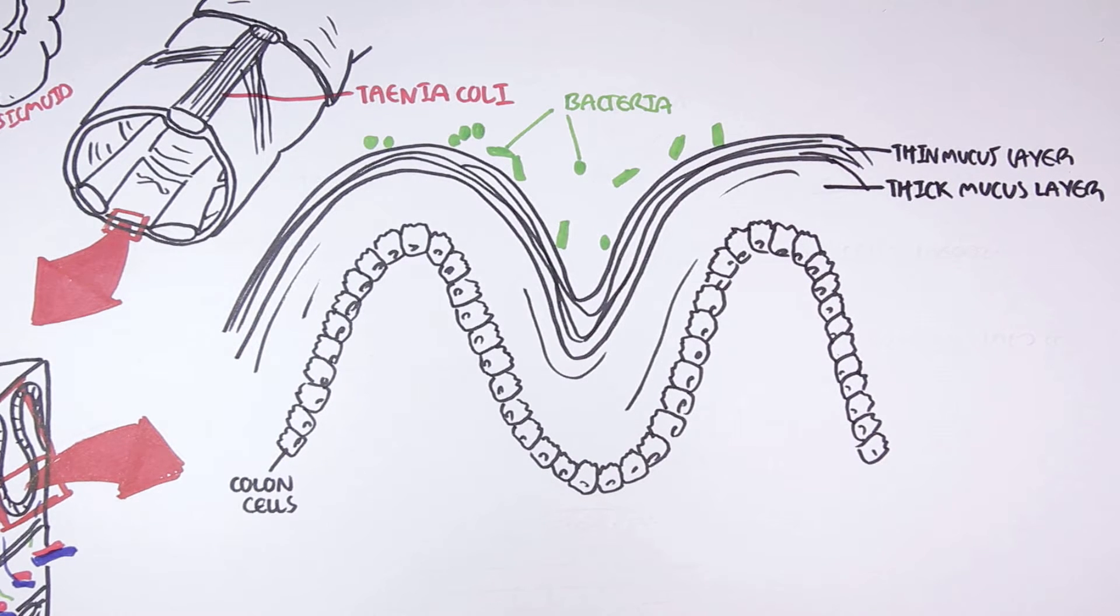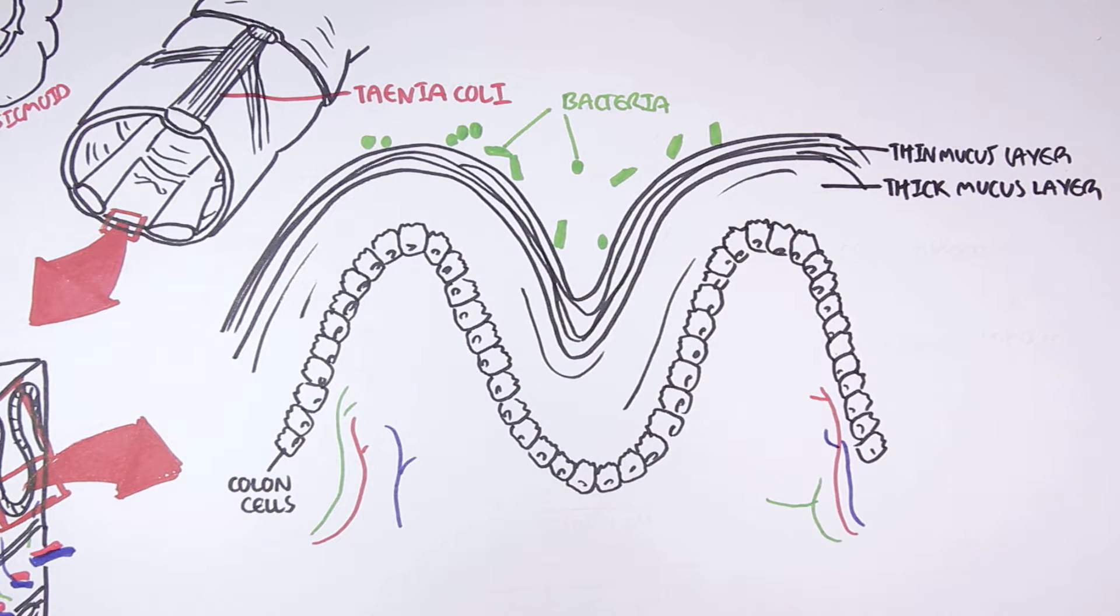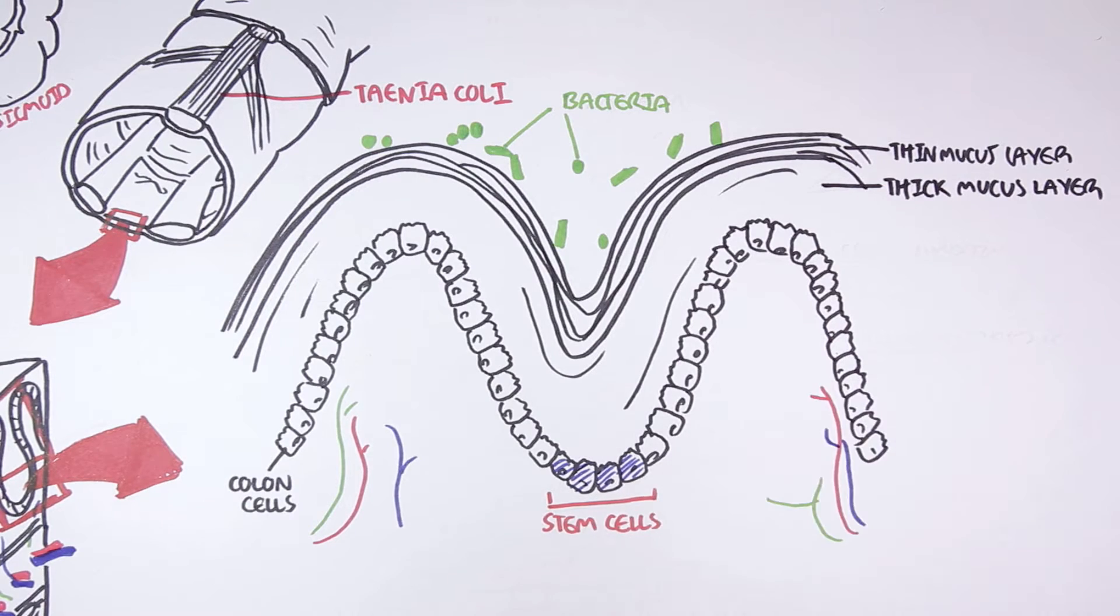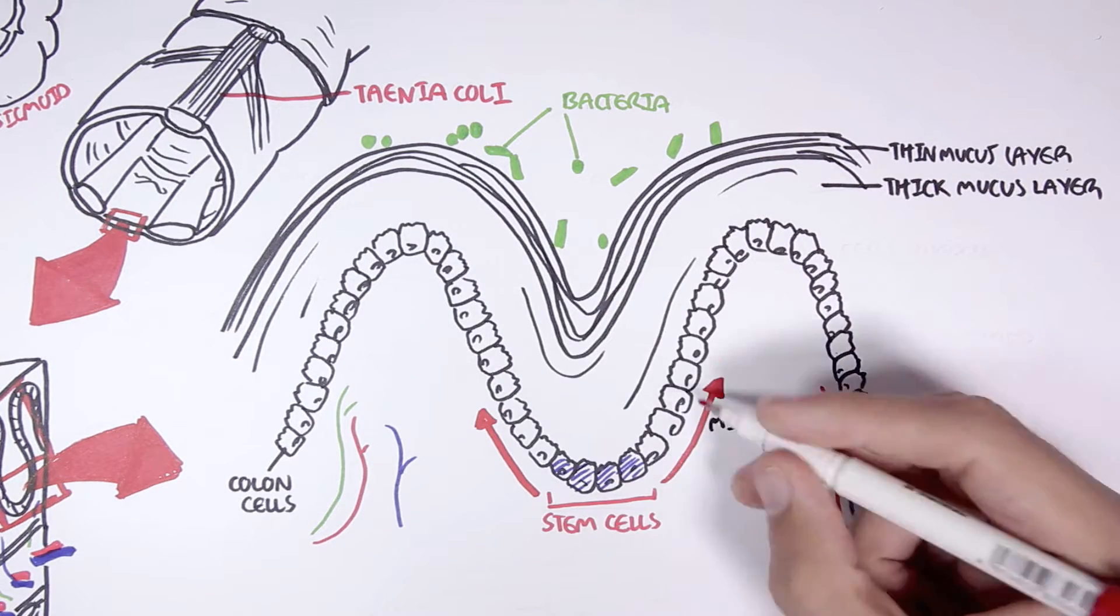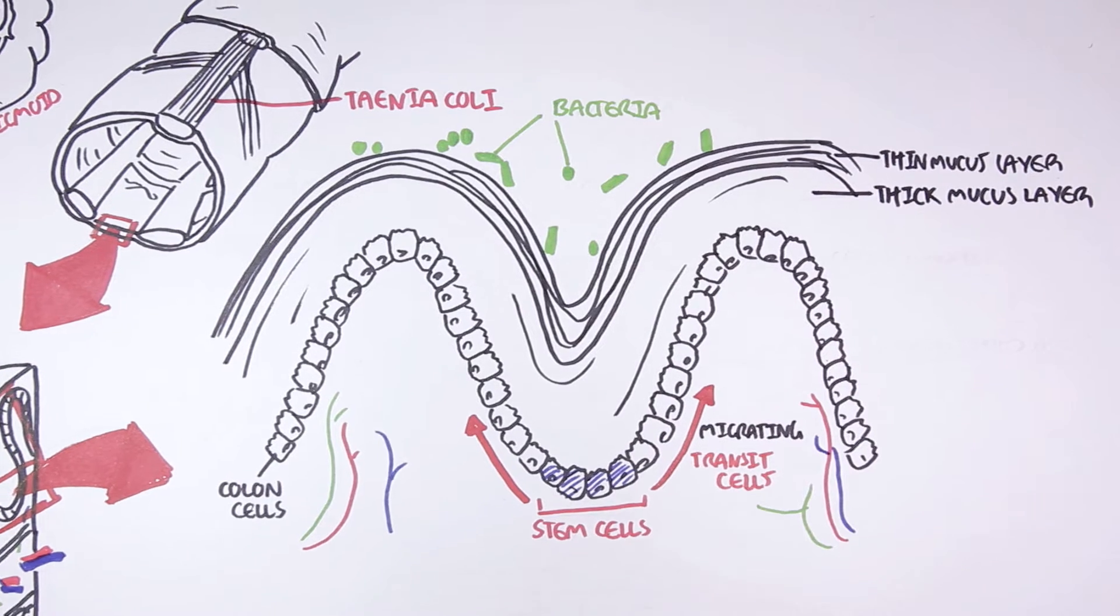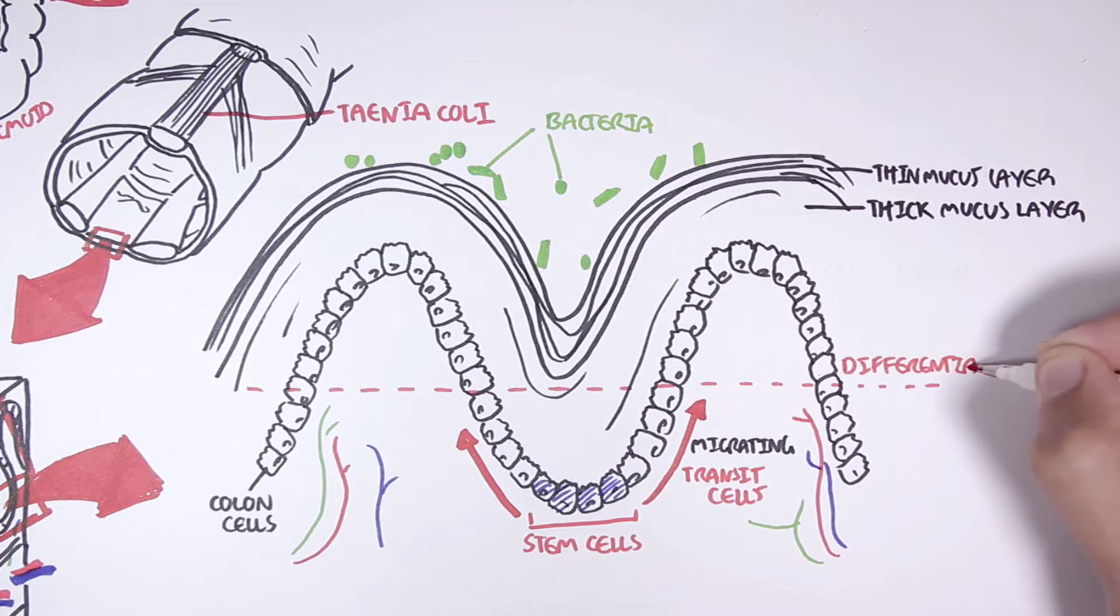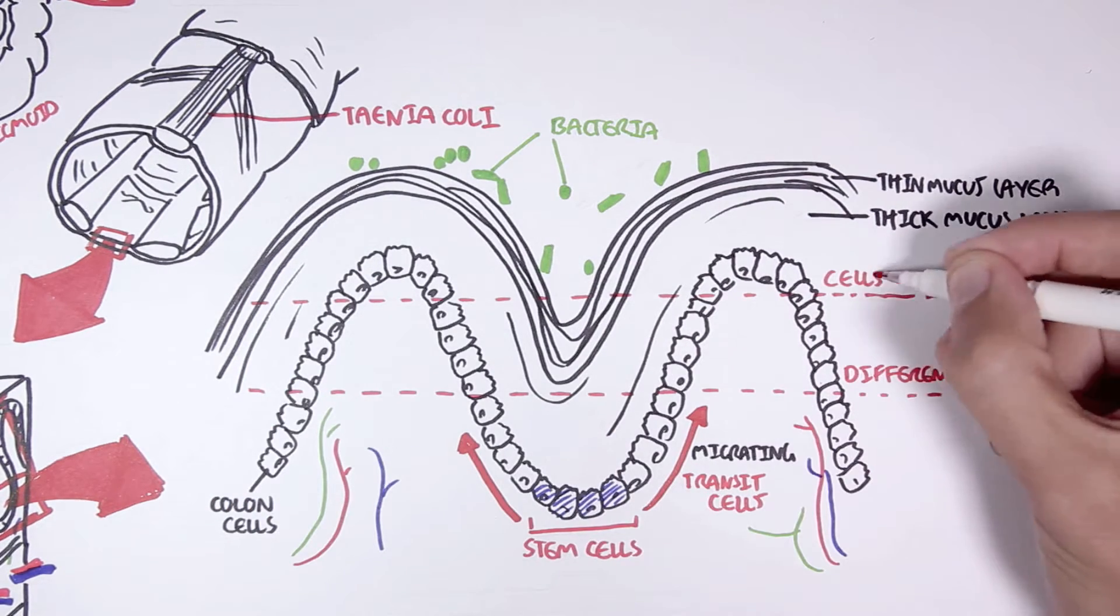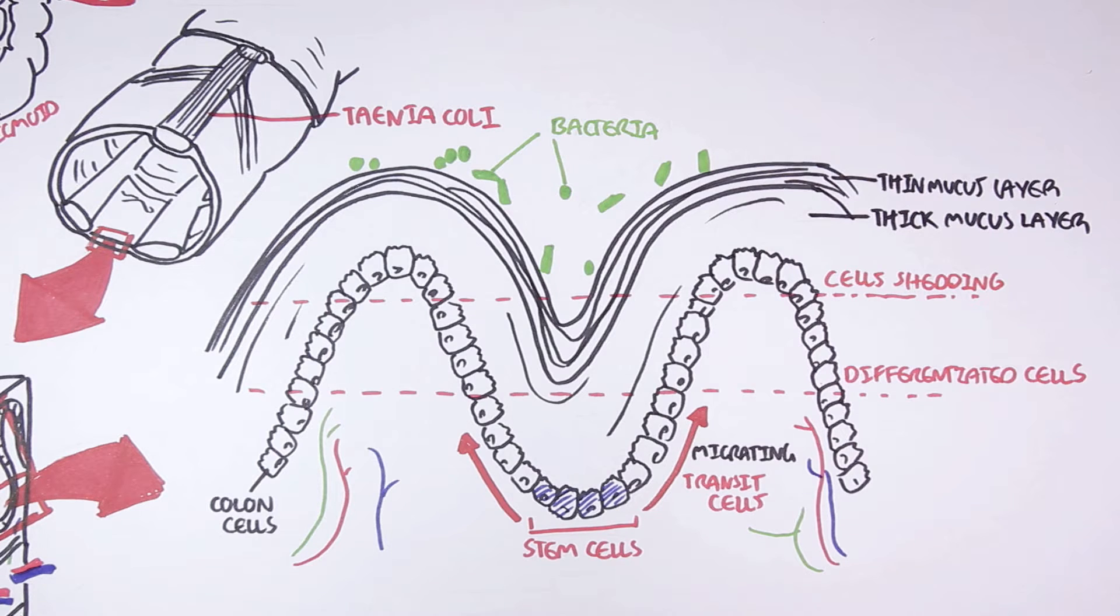The colon cells they all arise from the cells within the crypts, because within the crypts we have stem cells that migrate up. These transit cells will move up where they will finally differentiate into different types of cells, and after some time once they progressively move up they will begin to shed, allowing new cells to arise from the bottom again. Therefore you can think of it as a cycle where cells keep renewing.